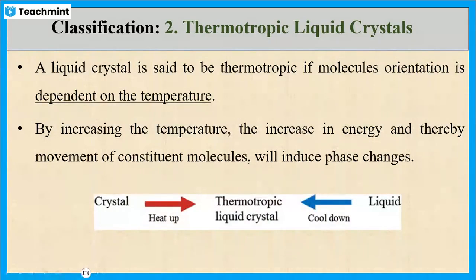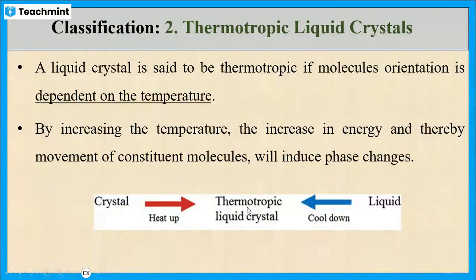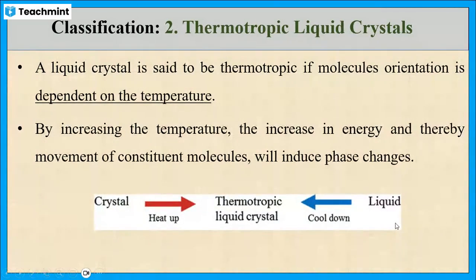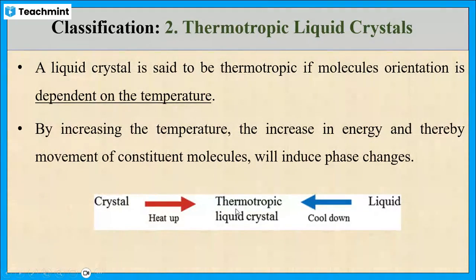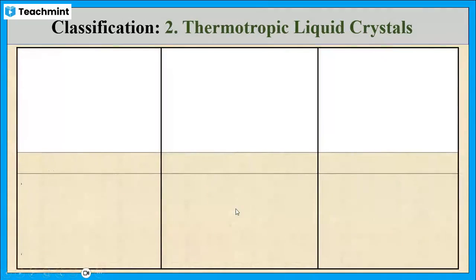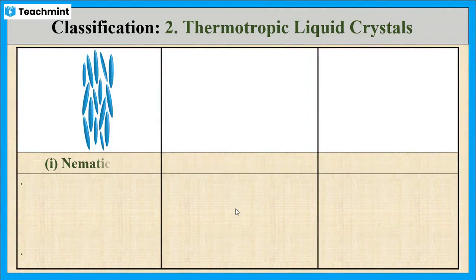Solid crystals on heating will turn into thermotropic liquid crystals, whereas in the case of a liquid, cooling is required to get a liquid crystal. The thermotropic liquid crystals are further classified into three categories: the first one is nematic liquid crystals.